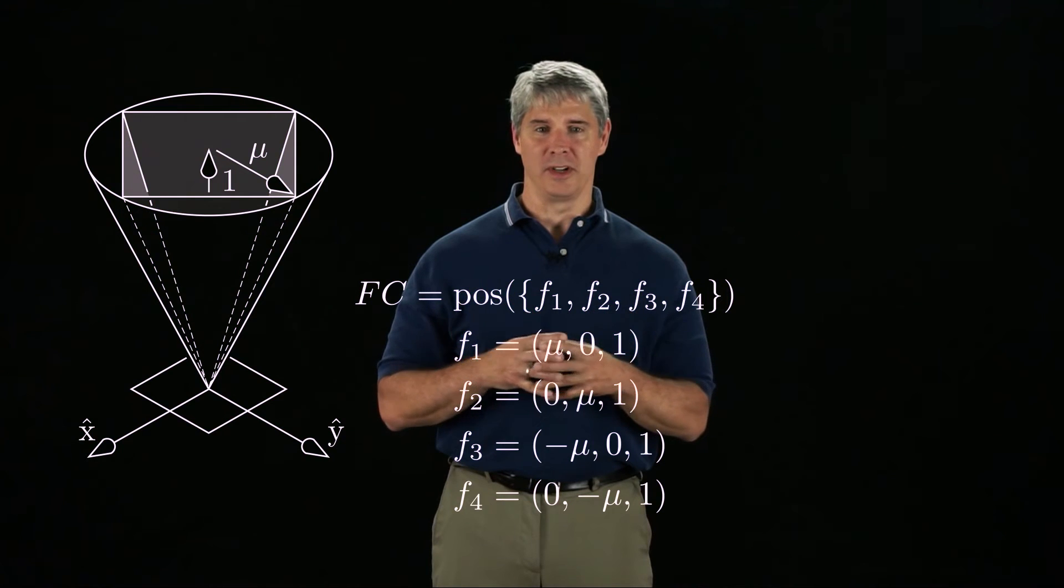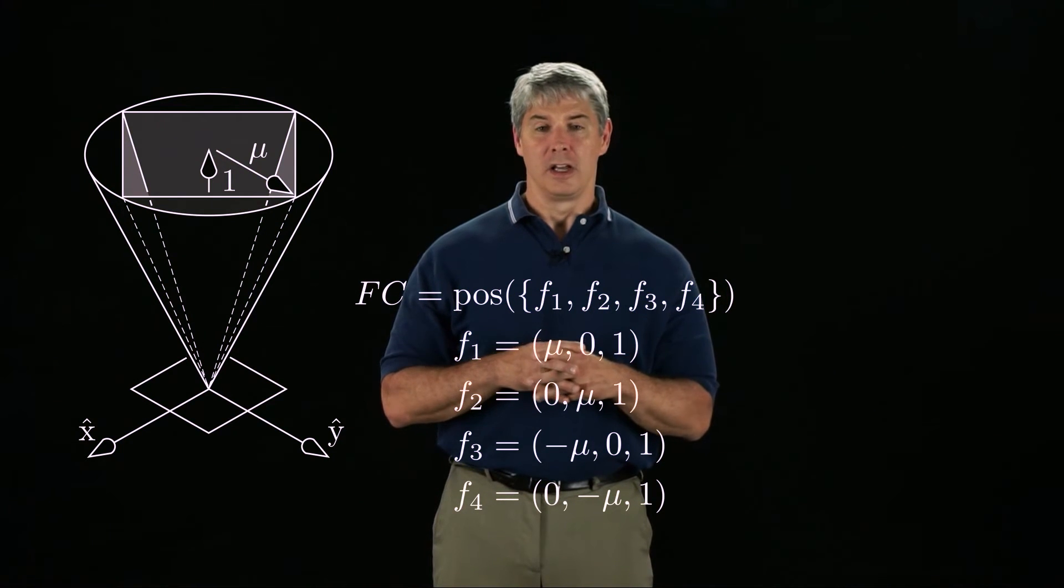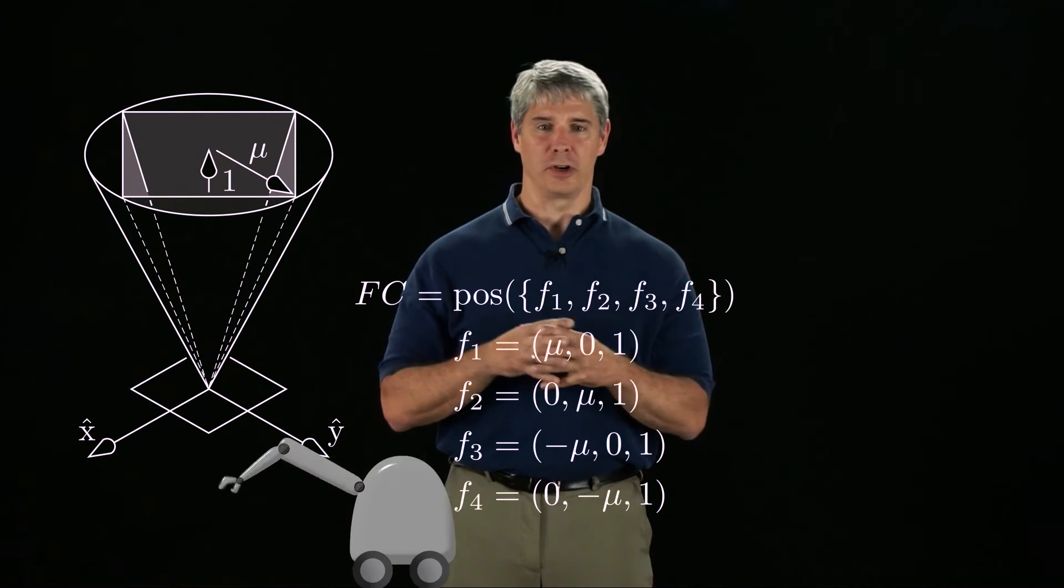The polyhedral cone is an under-approximation of the friction cone. To more closely approximate the quadratic cone, one could use more cone edges.